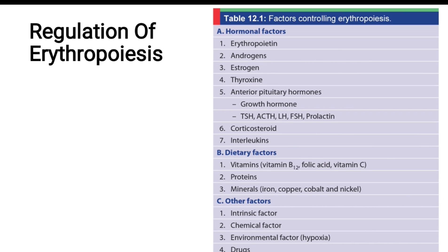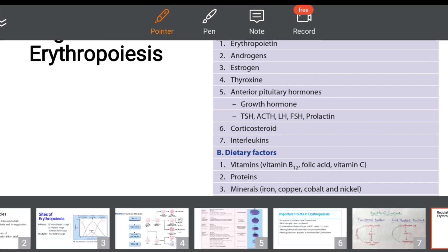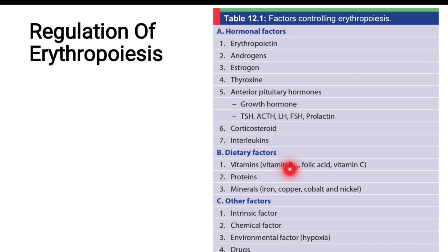Dietary factors include vitamins, proteins, and minerals. In vitamins: vitamin B12, folic acid, and vitamin C. Vitamin B12 and folic acid are required for the synthesis of DNA, and vitamin C is for the absorption of iron from the gut, where it converts Fe³⁺ to Fe²⁺. Proteins are required for the synthesis of globin in hemoglobin. Minerals — iron, copper, and cobalt — are also required. Other factors which influence erythropoiesis include the intrinsic factor and environmental factors, drugs, and chemicals. Vitamin B12 is also called the extrinsic factor of Castle.